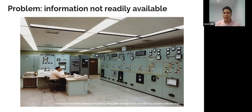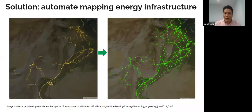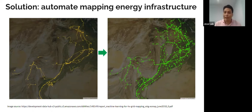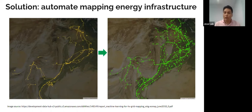So how can we improve the speed of all this process? Some approaches have been already implemented using machine learning. For instance, this is a case of the World Bank that developed results released in June 2018. This map is from Pakistan. They start with grid information on the left, and using machine learning methods, they were able to predict and make inference about the location of this infrastructure.